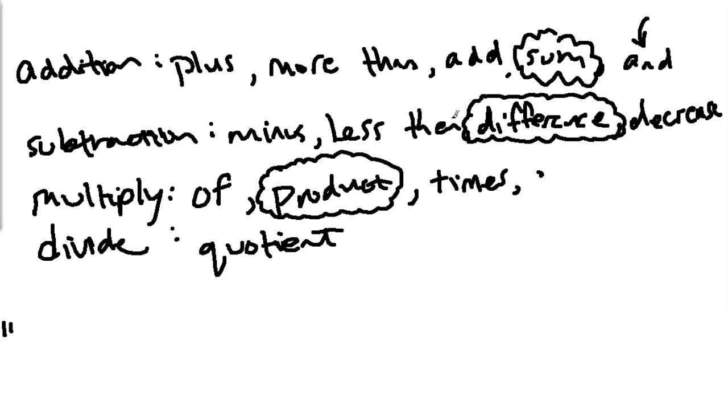Subtraction minus less than difference is a big keyword and decrease all denote subtraction. For multiplication, the word of actually means multiply. Product and times. Product is the keyword. And divide, right now I have on here just one word, quotient. They might also write divide.